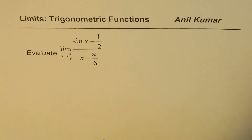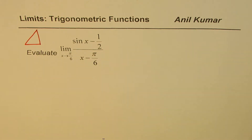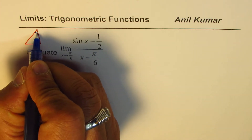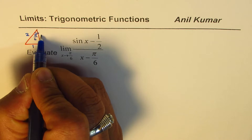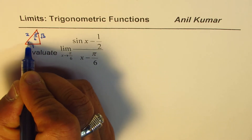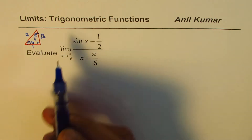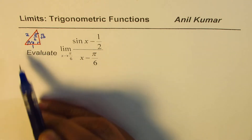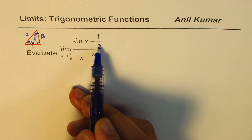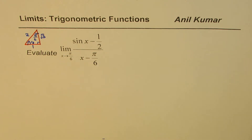Let me draw a triangle to show you the values. This is a very special right triangle where one angle is π/6. The sides are 1, 2, and √3, and the other angle is π/3. So sin(π/6) = 1/2. That gives us 1/2 - 1/2 = 0 in the numerator, and π/6 - π/6 = 0 in the denominator — a 0/0 indeterminate form.